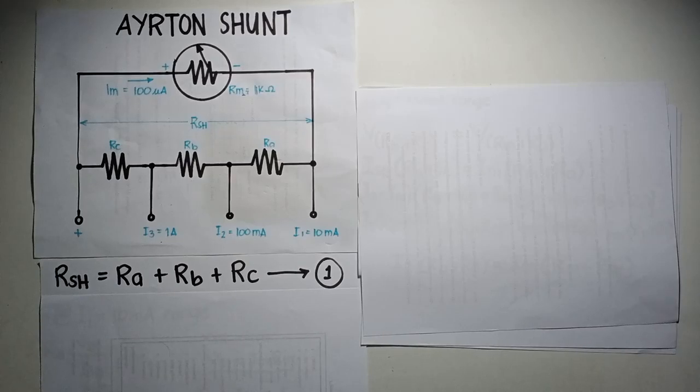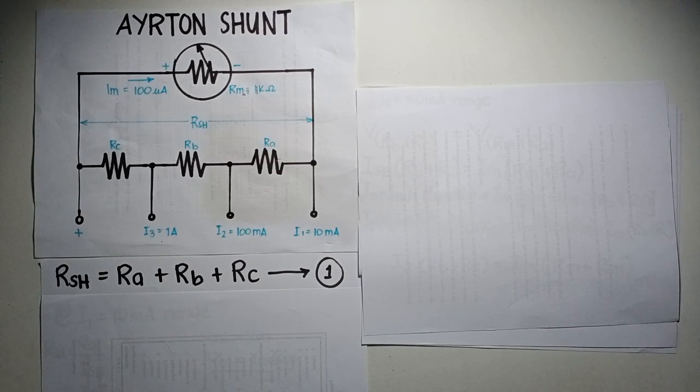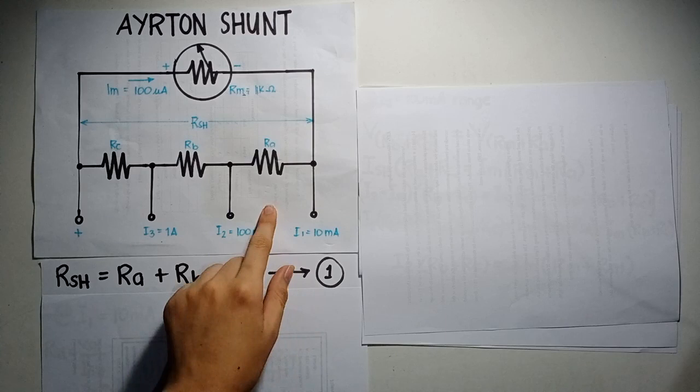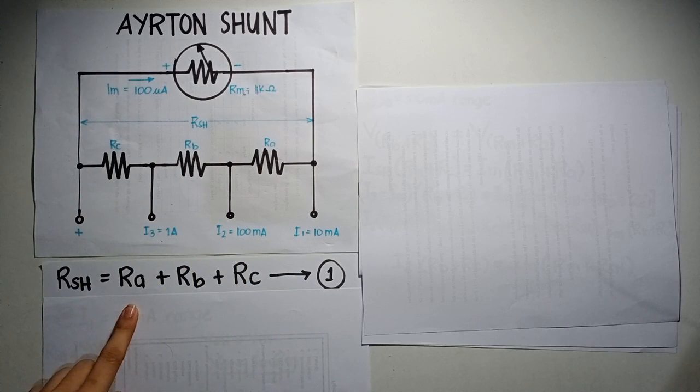The next type of the Arseneval meter movement is the Ayrton shunt. Unlike shunt resistance, Ayrton shunt works in a multi-range ammeter. In this circuit, RSH is the summation of Ra plus Rb and Rc.